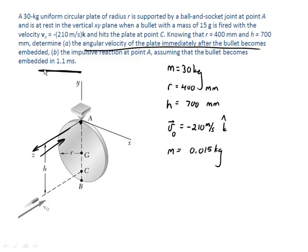Initially, the bullet has angular momentum. We're going to find all the angular momentums about point A. So the bullet has angular momentum before the impact. And that angular momentum is going to be R cross MV, just like we defined earlier on in the course.